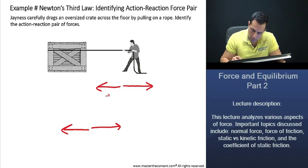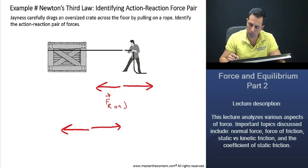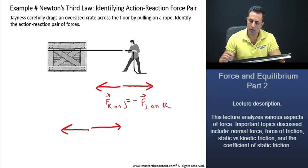We'll start here with the force of the rope on Janus. The force of the rope on Janus is going to be equal in magnitude and opposite in direction to the force that Janus exerts on the rope.